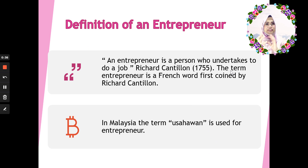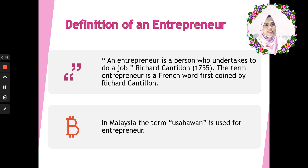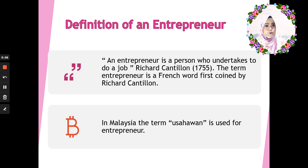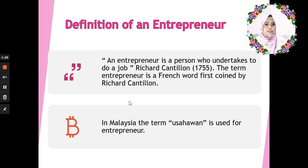First thing first, the definition. This is important so that you know what is actually an entrepreneur. Entrepreneurship, then entrepreneur - an entrepreneur is actually a person. According to Richard Cantillon in 1755, an entrepreneur is a person who undertakes to do a job. It is actually a French word first coined by Richard Cantillon. In Bahasa Malaysia, we call it usahawan.